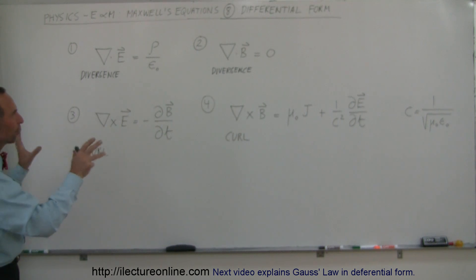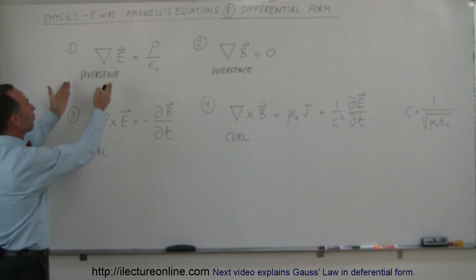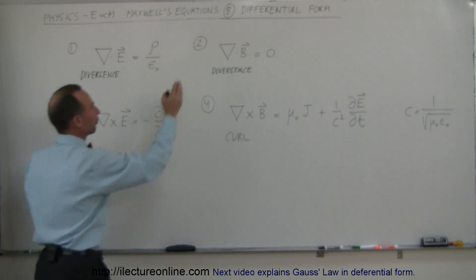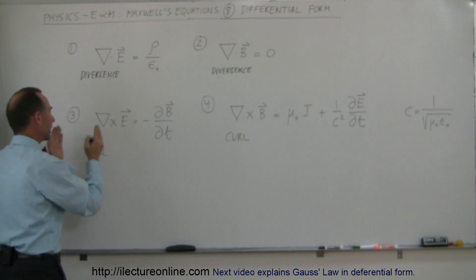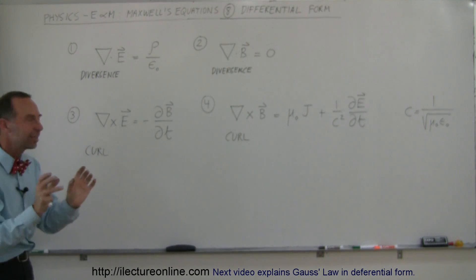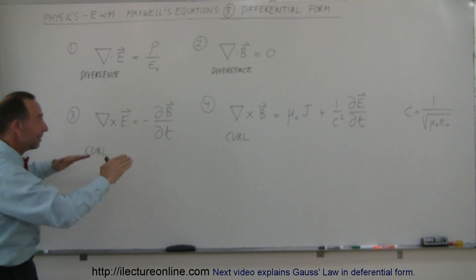So those are the four equations of differential form. In the next several videos we'll go through each one separately and explain exactly where that came from, what the divergence is, how to take a divergence of an electric field, how to take the divergence of a magnetic field, how to take the curl of an electric field or the curl of a magnetic field, and then physically what do those things really mean. You'll see there's so much similarity between this and the integral form of the equation.